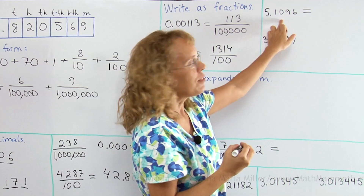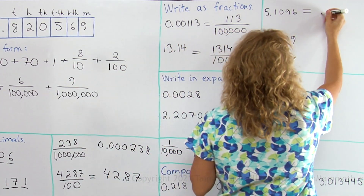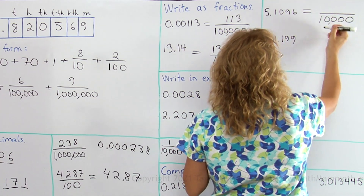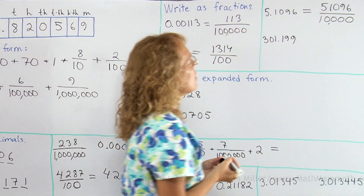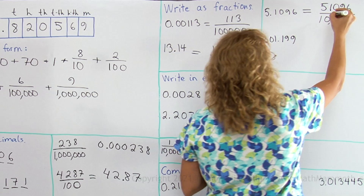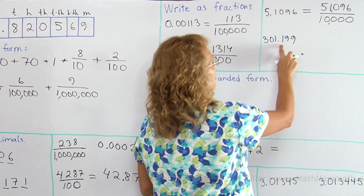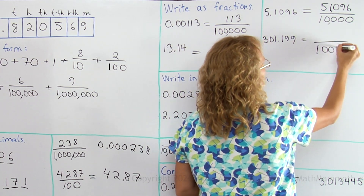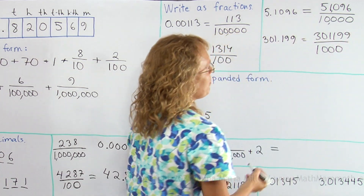Here — four decimal digits, so what is our denominator? I have to have four zeros here. Then I just copy everything from here, all the digits — so it is fifty-one thousand ninety-six divided by ten thousand. And here: three decimal digits would mean a denominator of one thousand, and then just copy those digits over there.